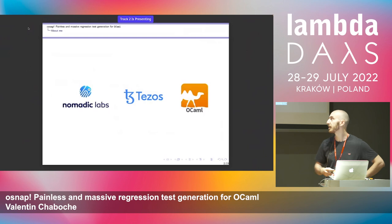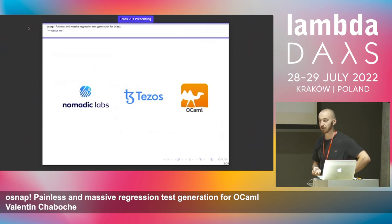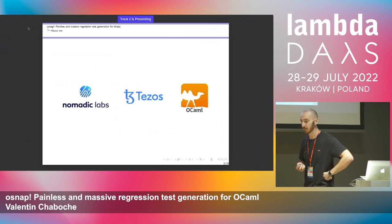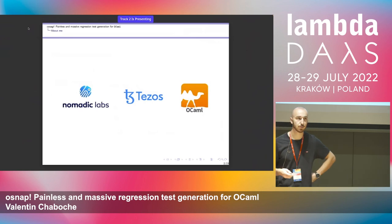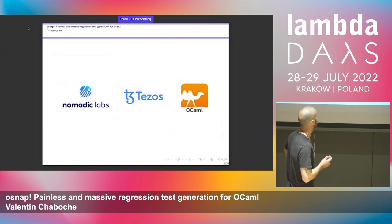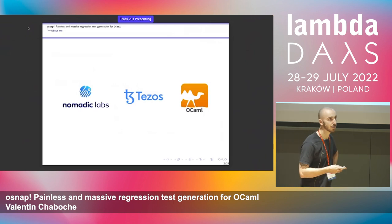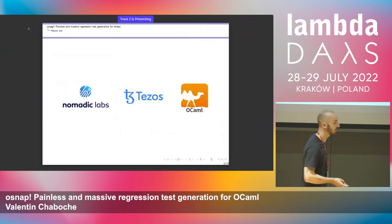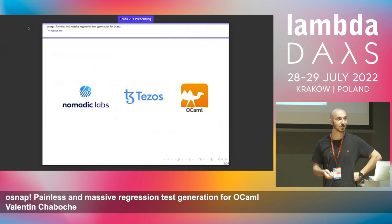We are exclusively funded by the Tezos Foundation, which runs the Tezos blockchain. We mainly develop the blockchain with a big research and development center. The funny thing about Tezos, besides being a blockchain, is that we developed it in OCaml — a functional programming language of the ML family, also developed in France.